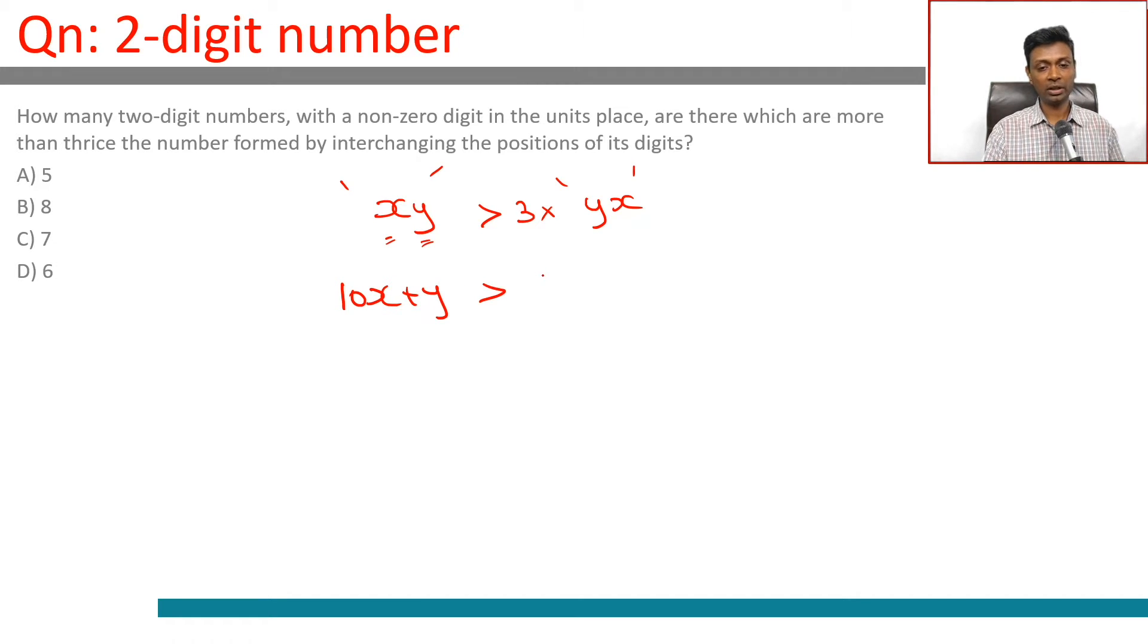10x plus y is greater than 30y plus 3x. So 7x is greater than 29y, which means x is greater than 29 by 7 times y.